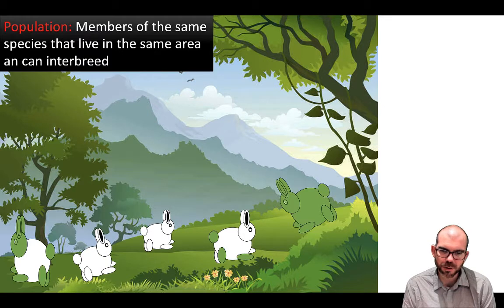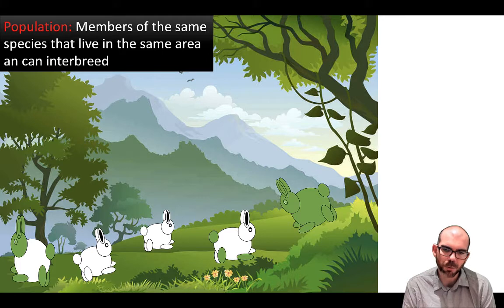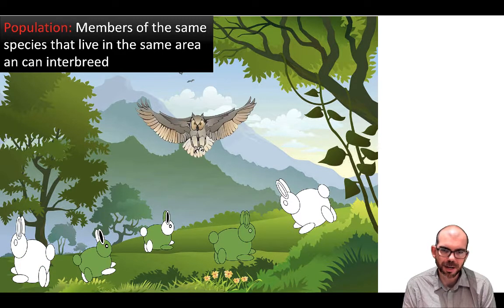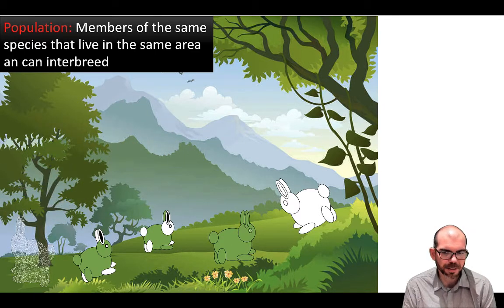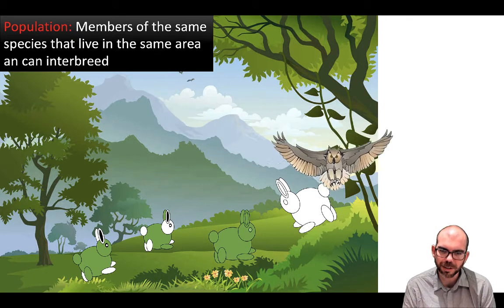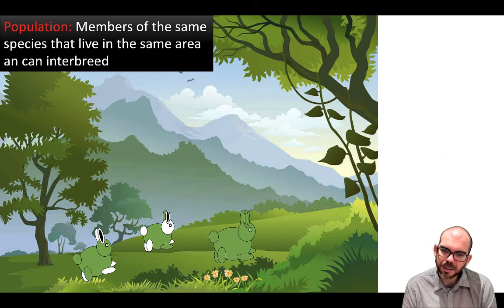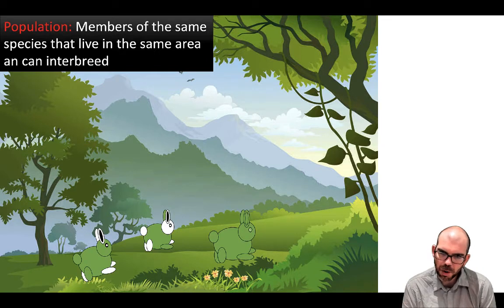As they interbreed, this trait is co-dominant, so you can see we have some all white bunnies, some all green bunnies, and some green and white bunnies. They interbreed and here comes a predator. Who is this owl going to eat? Well, the owl is likely going to be eating the white rabbits. They're a lot easier to spot and they don't blend into the background like the green ones. So now that they have been eaten, we're left with one entirely green bunny and two mostly green bunnies.